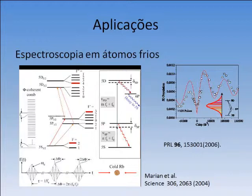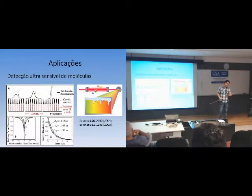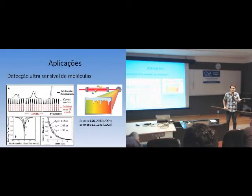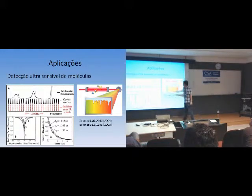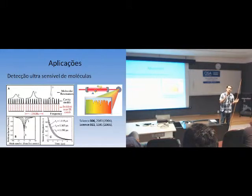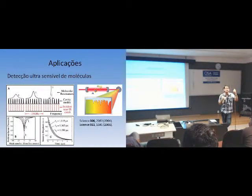Outra aplicação do pente é a detecção ultrassensível de moléculas. Basicamente, se usa uma cavidade cujo free spectral range tem que coincidir com a frequência do pente. Se você faz isso, você tem um sinal muito maior do que teria com um laser CW, e você pode jogar pequenas quantidades de átomos ou moléculas aqui, com uma taxa de sinal-ruído bem alta. Esse tipo de espectroscopia foi usada para fazer detecção de metano na respiração de pessoas — quando a pessoa está desenvolvendo câncer, ela pode soltar pequenas quantidades de metano na respiração.